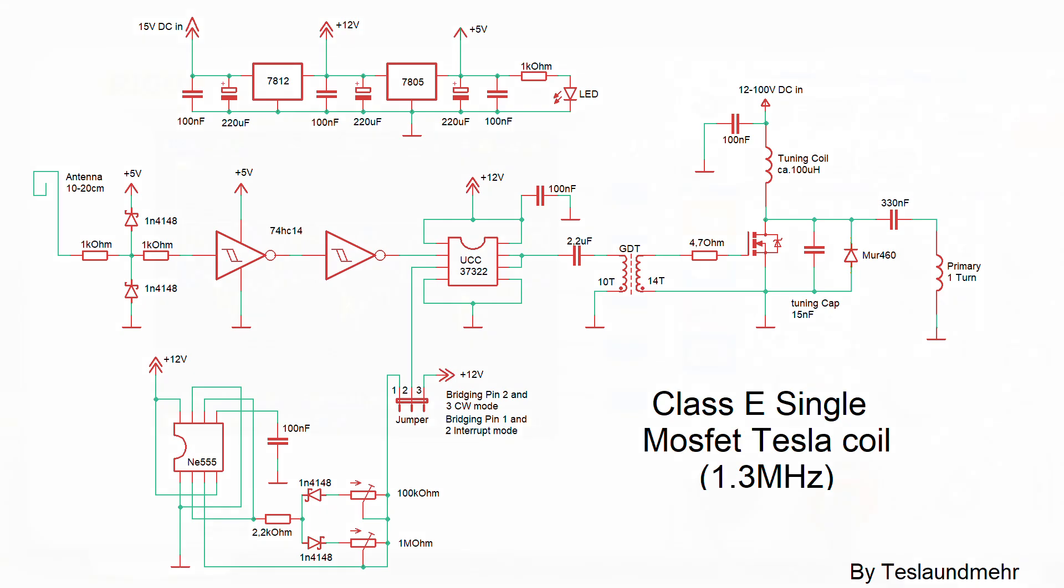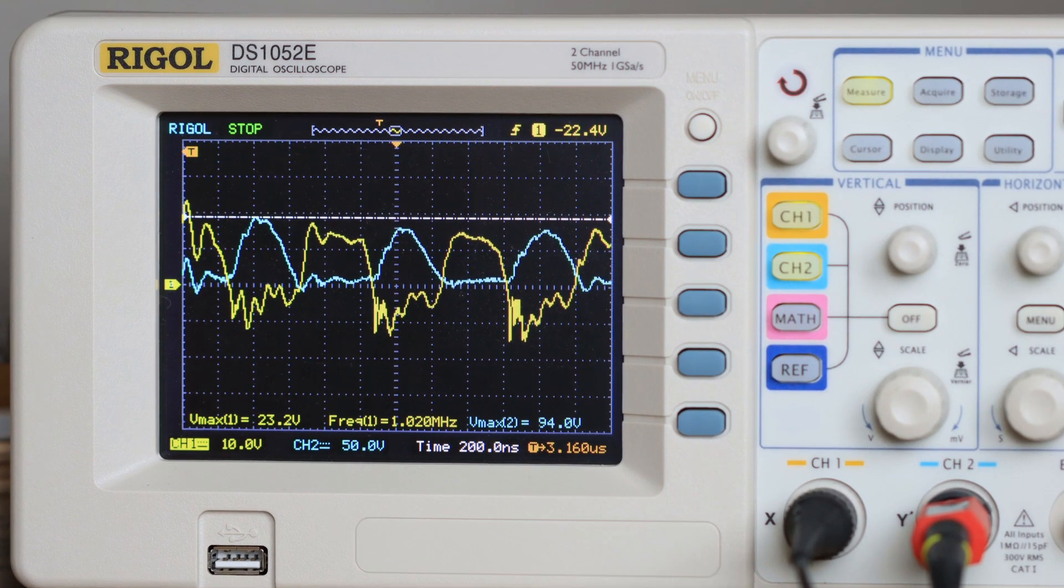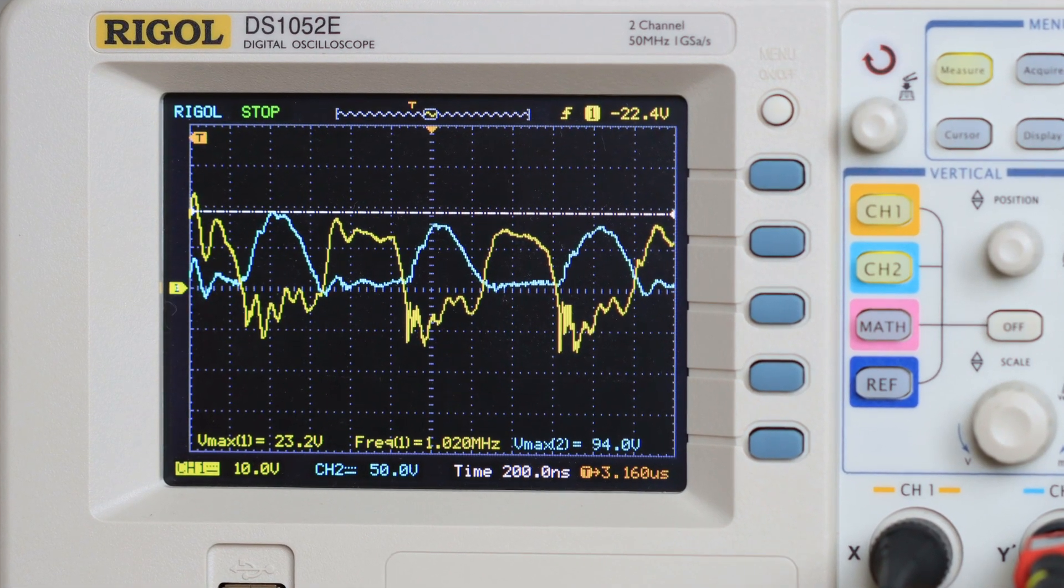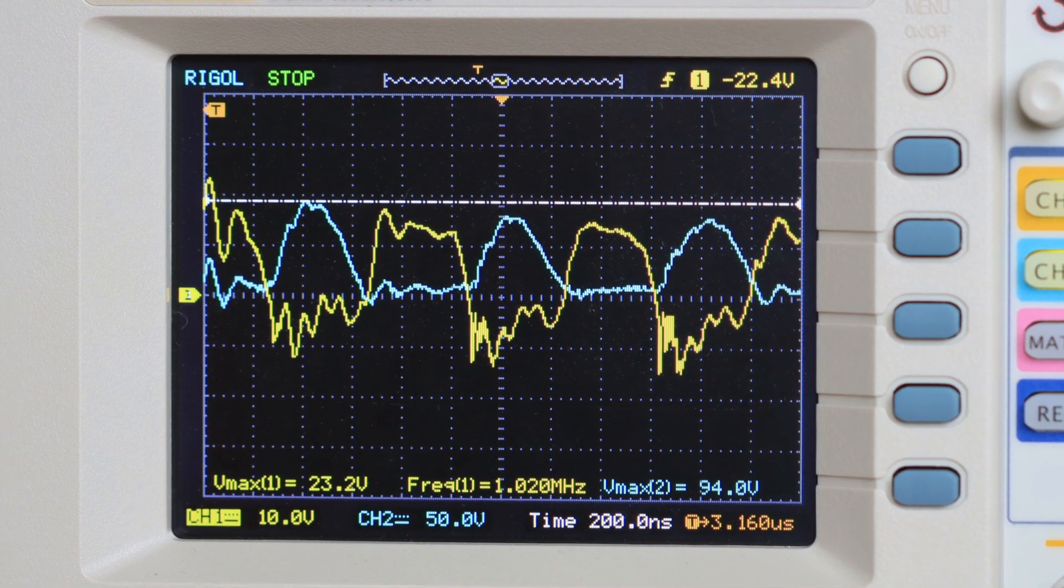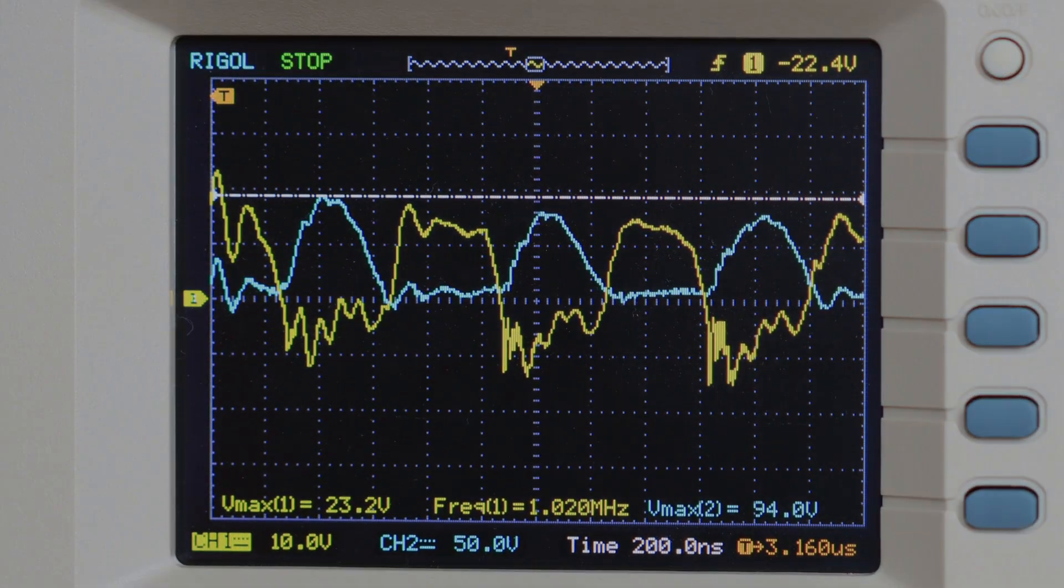Before we start with the discharges I want to show you again on an oscilloscope how far my circuit works in Class E mode. Yellow is the gate signal, blue the voltage curve at the capacitor between drain and source. So guys, enough theory, let's go!